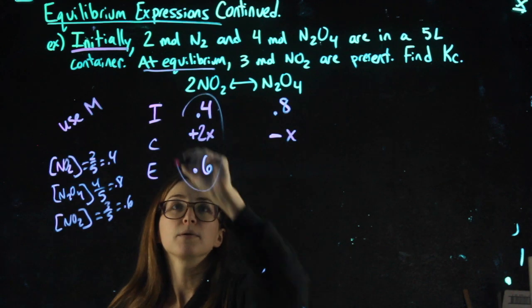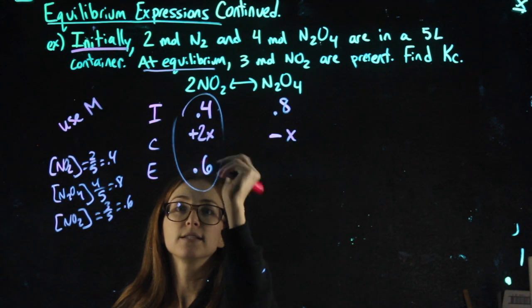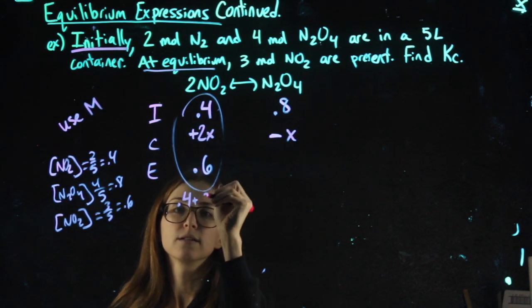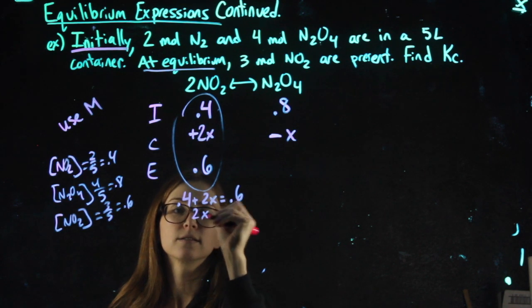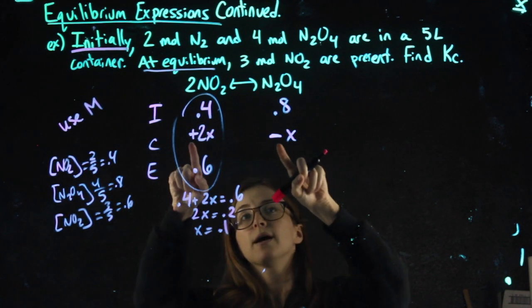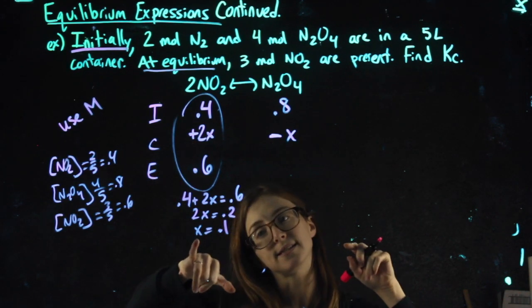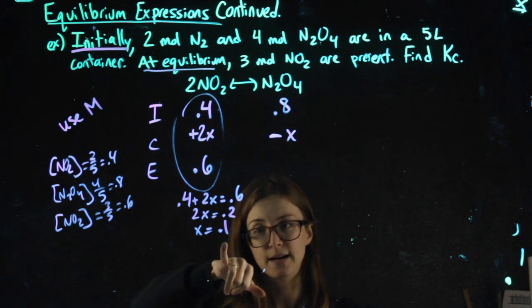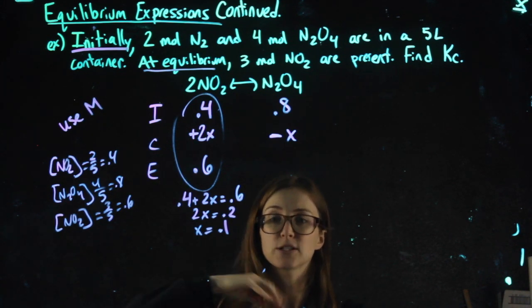Wherever you have a complete column, that serves as an equation, 0.4 plus 2x equals 0.6. And we solve this for x. Now, if you ever do it backwards from how I'm doing a problem, if you put minus here and plus there, you should get the same x value with the opposite sign. So if I had a minus here, I'd end up with negative 0.1 as my x, and that's okay. X's can be negative.